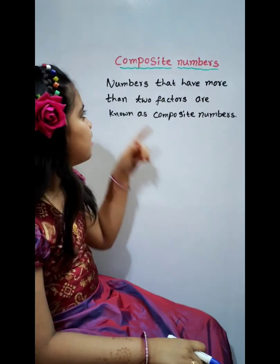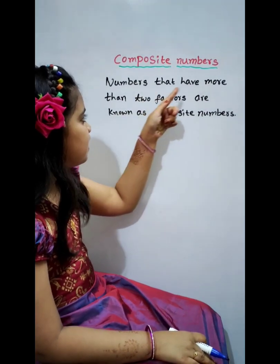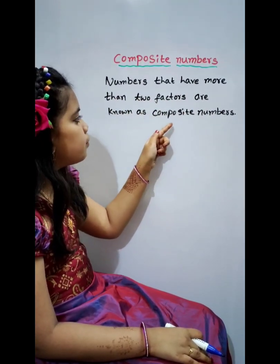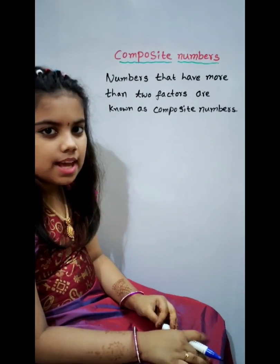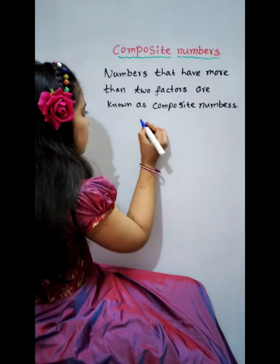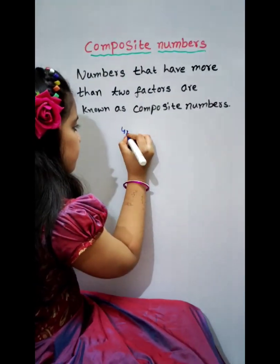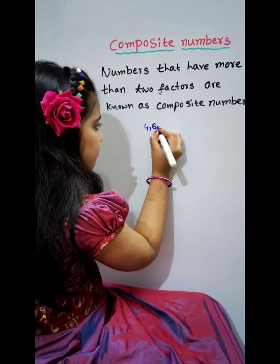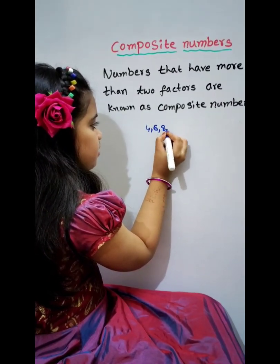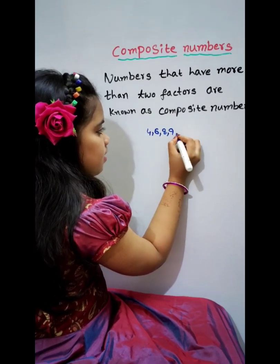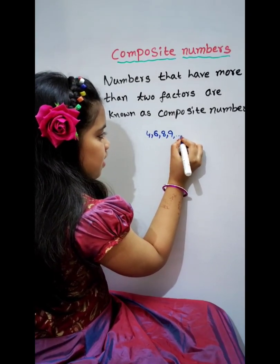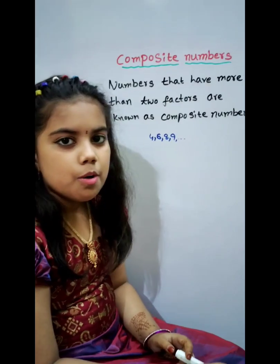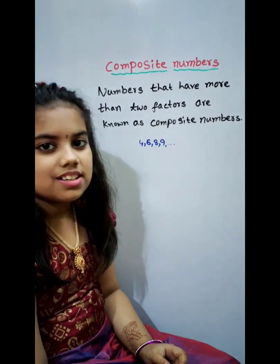Composite Numbers. Numbers that have more than 2 factors are known as Composite Numbers. For example, 4, 6, 8, 9, etc. These numbers have more than 2 factors.